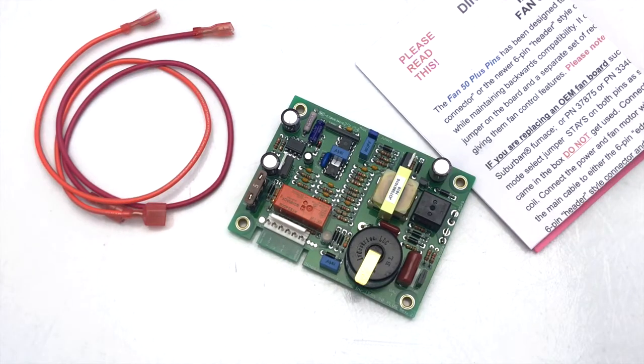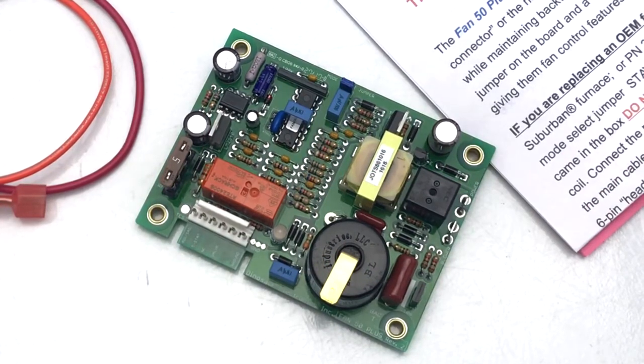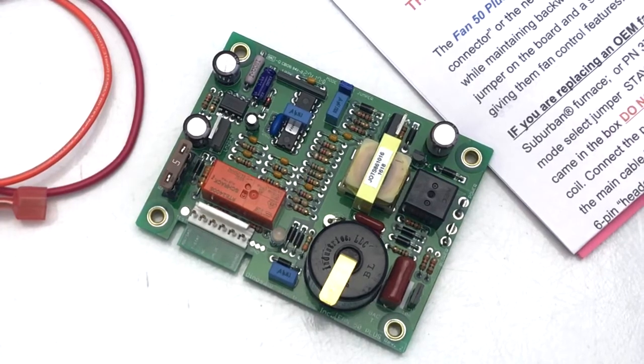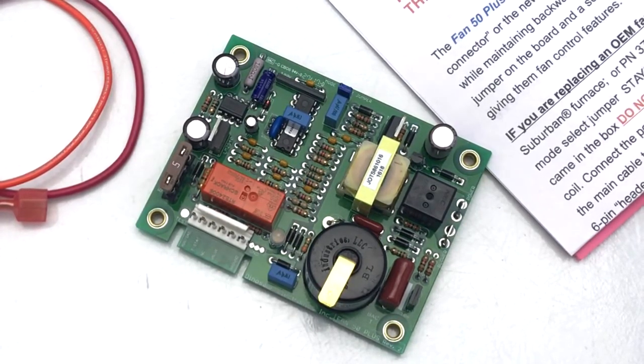Hey guys, Panther RV Products here. Today we're looking at the Dinosaur Electronic Fan 50 Plus Pins Replacement Igniter Board. This board is going to replace the igniter board on compatible Atwood and Suburban RV furnaces.